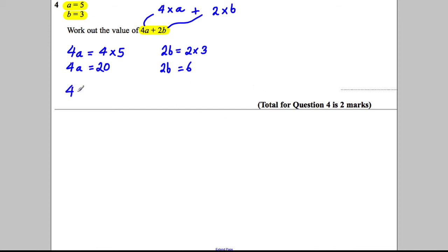So therefore, 4A add 2B is equal to the 20 from here, add the 6 from here, and that would give us the answer 26. So write 26 here.